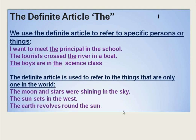We also use the definite article to refer to things that are only one in the world — that is, unique things. For example: 'The moon and stars were shining in the sky.' We use 'THE' before 'moon' because there is only one moon that moves around our earth. Similarly, there is only one sky, so we use the definite article before 'sky' as well.